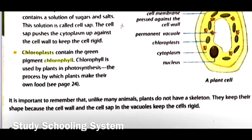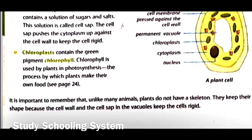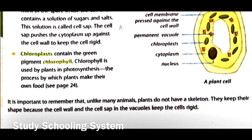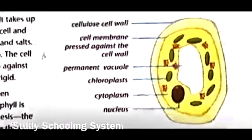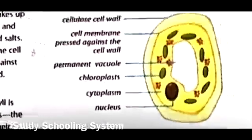'There is also chloroplast, which contains the green pigment chlorophyll.' Don't confuse chloroplast and chlorophyll — chloroplast is the structure and inside it you find chlorophyll, which is a green pigment. 'Chlorophyll is used by plants in photosynthesis — the process by which plants make their own food.' It is important to remember that unlike animals, plants do not have a skeleton; they keep their shape because the cell wall and cell sap in the vacuoles keep the cells rigid.